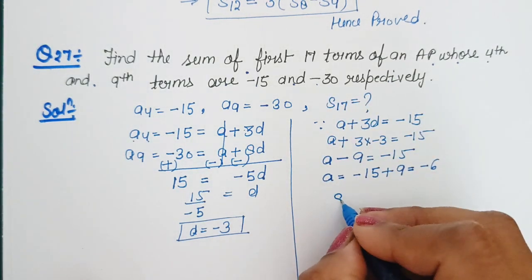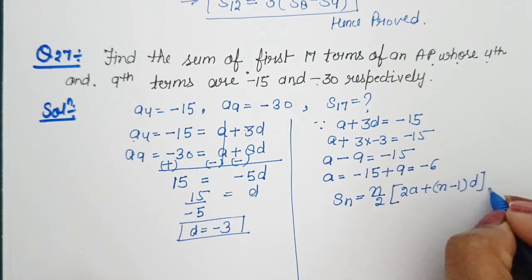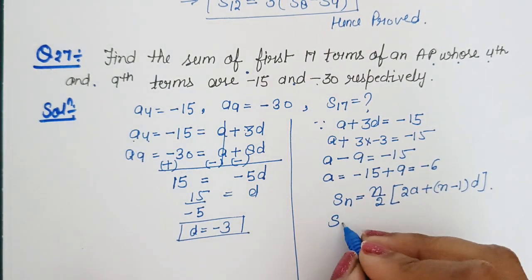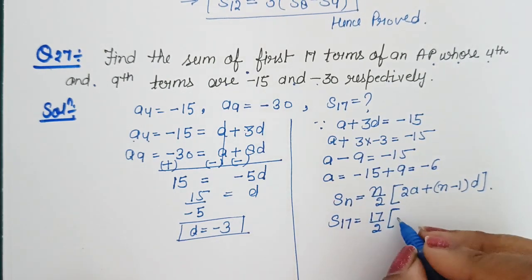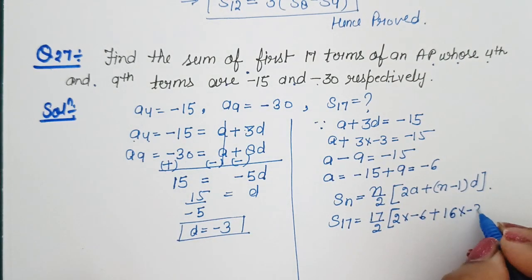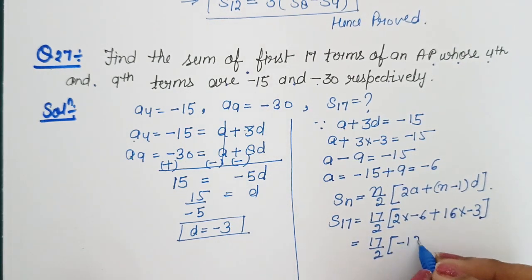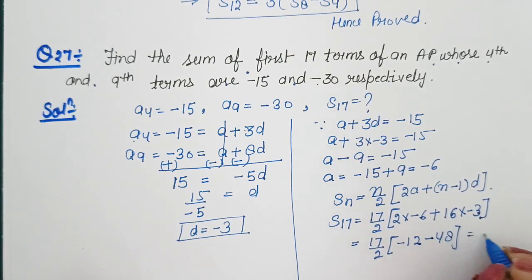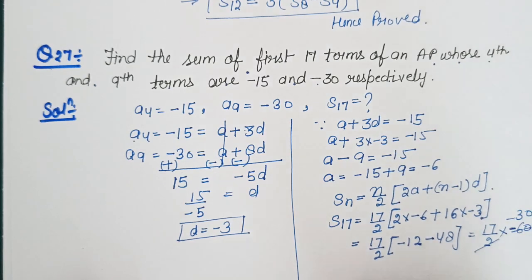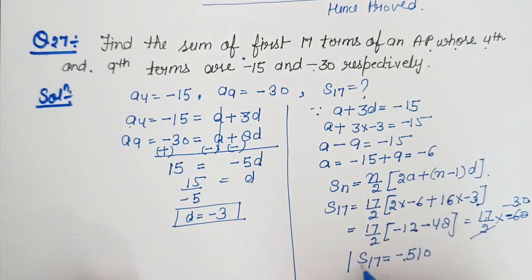Toh A ki value humein mili hai minus 6. Ab hum SN ka formula laga sakte hain: SN is equal to N by 2 in the bracket 2A plus N minus 1 times D. Ab is formula se humein S17 ki value nikalte hain. S17 is equal to 17 by 2 in the bracket 2 into minus 6 plus 16 into minus 3, which gives minus 12 plus minus 48, that is minus 60. So 17 by 2 into minus 60 gives minus 30, and 17 multiplied by minus 30 gives minus 510. S17 ki value humein milegi minus 510. This is the answer.